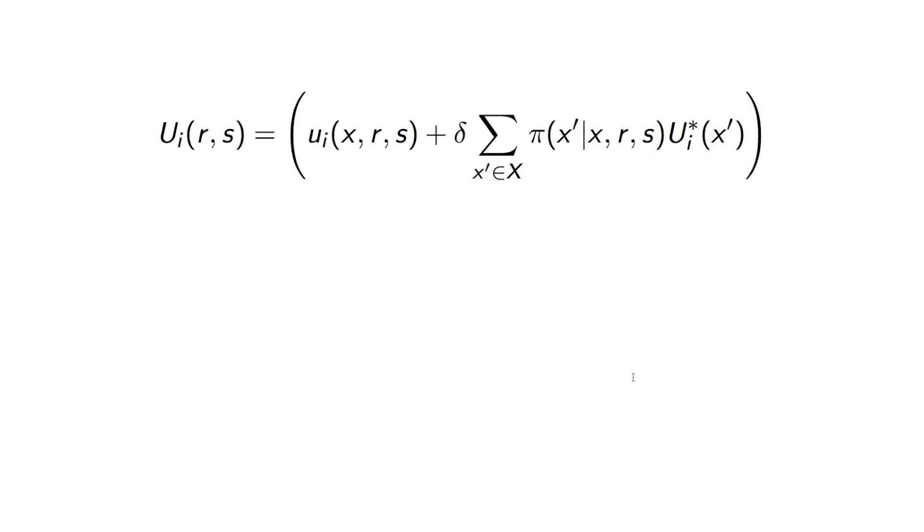So the utility to our players can be written down like this, where we assume that ui star is the player doing what's best at subsequent states. And we also assume players play this game infinitely, and so we have a discounting factor to take that on board.